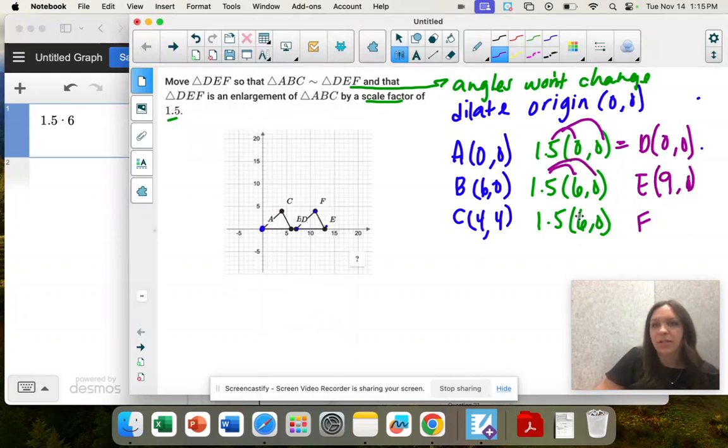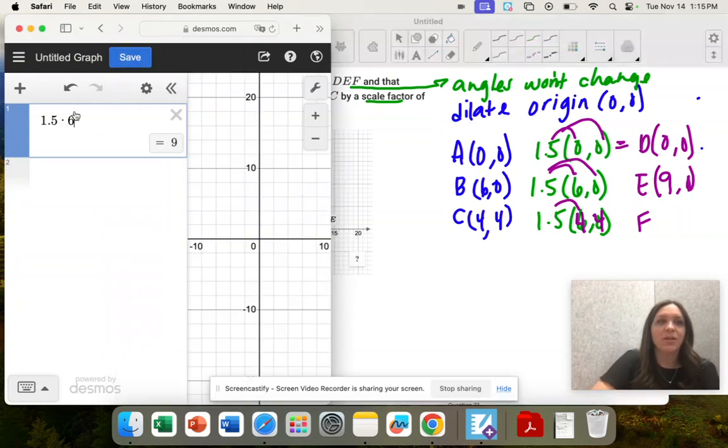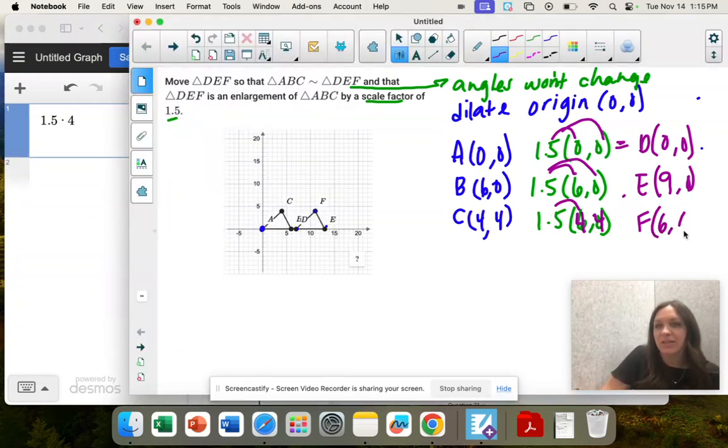And then why did I do that? It's (4,4). Goodness, I'm struggling. 1.5 times 4 is 6. I was thinking ahead. So (6,6) will be F.